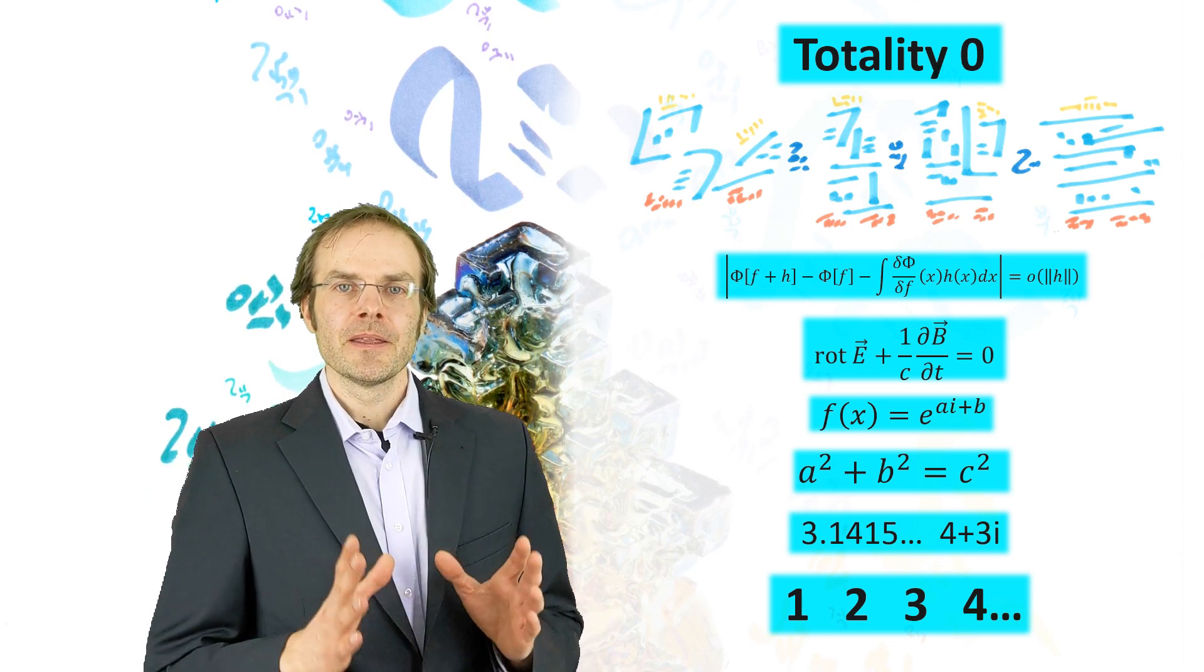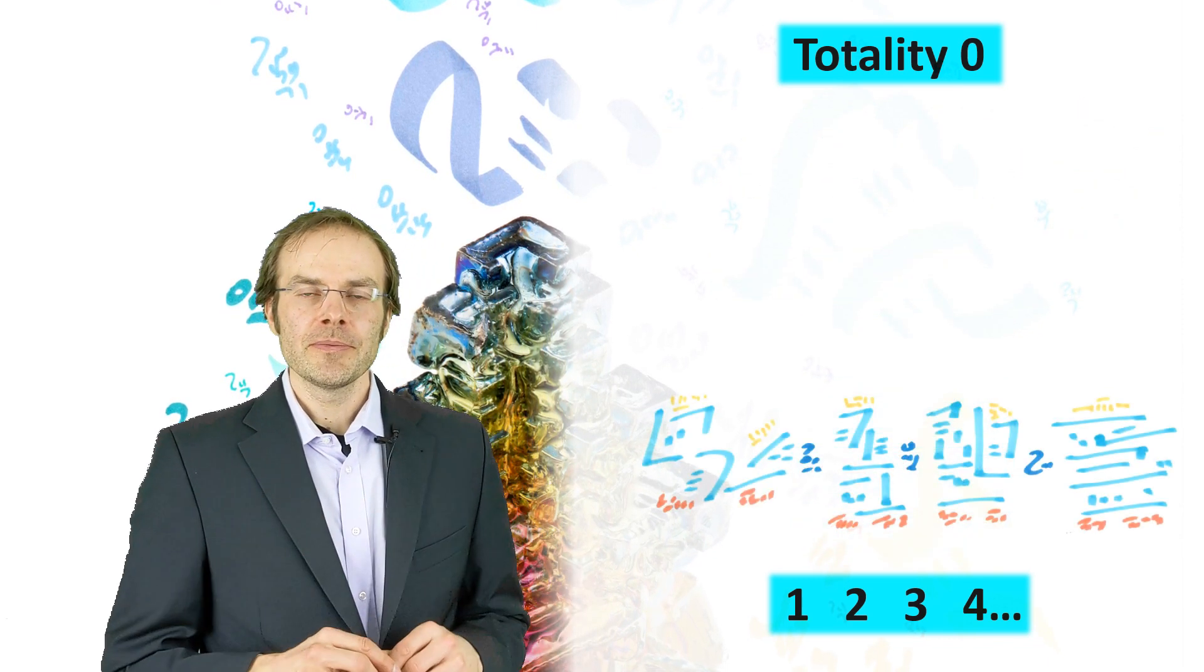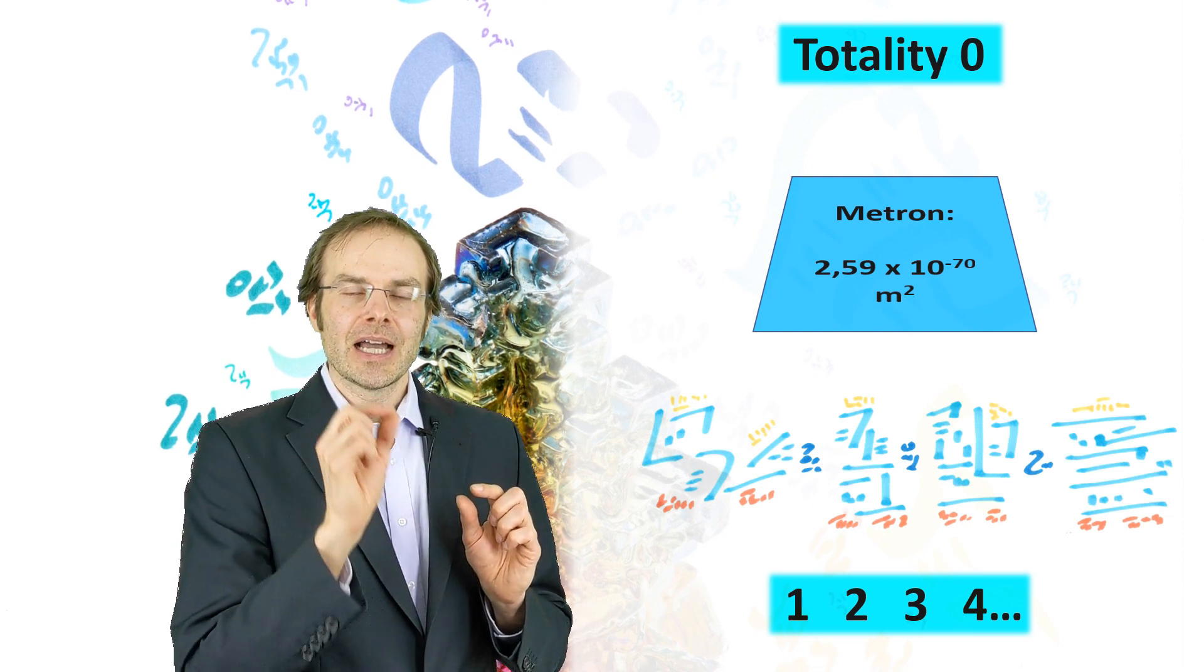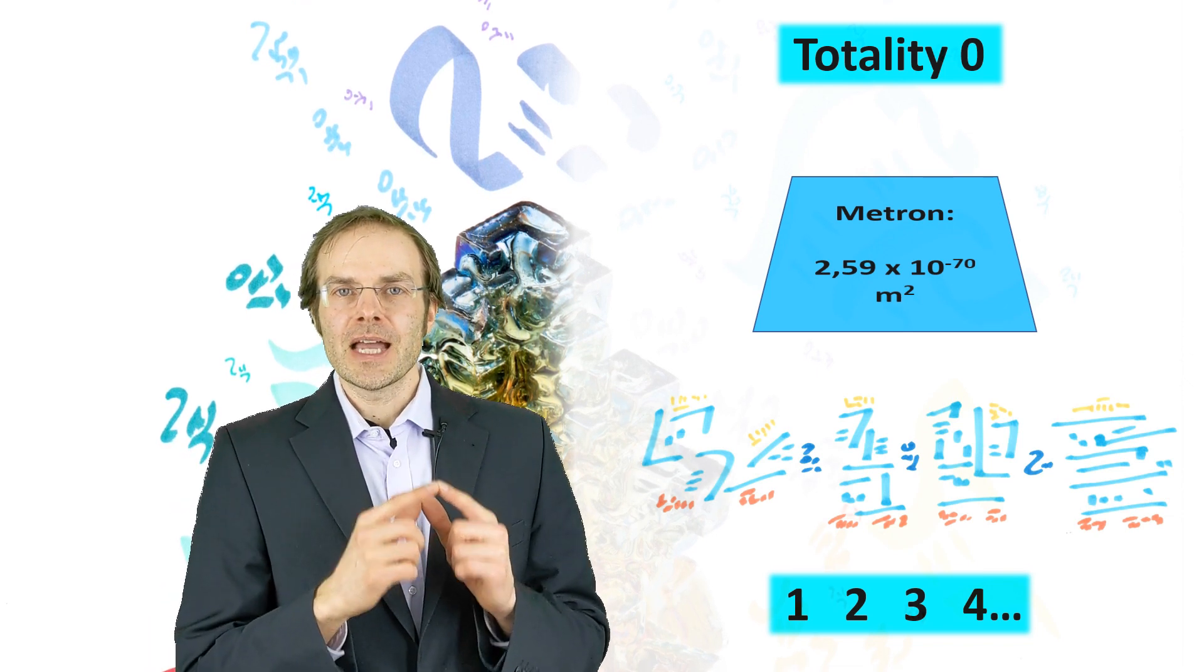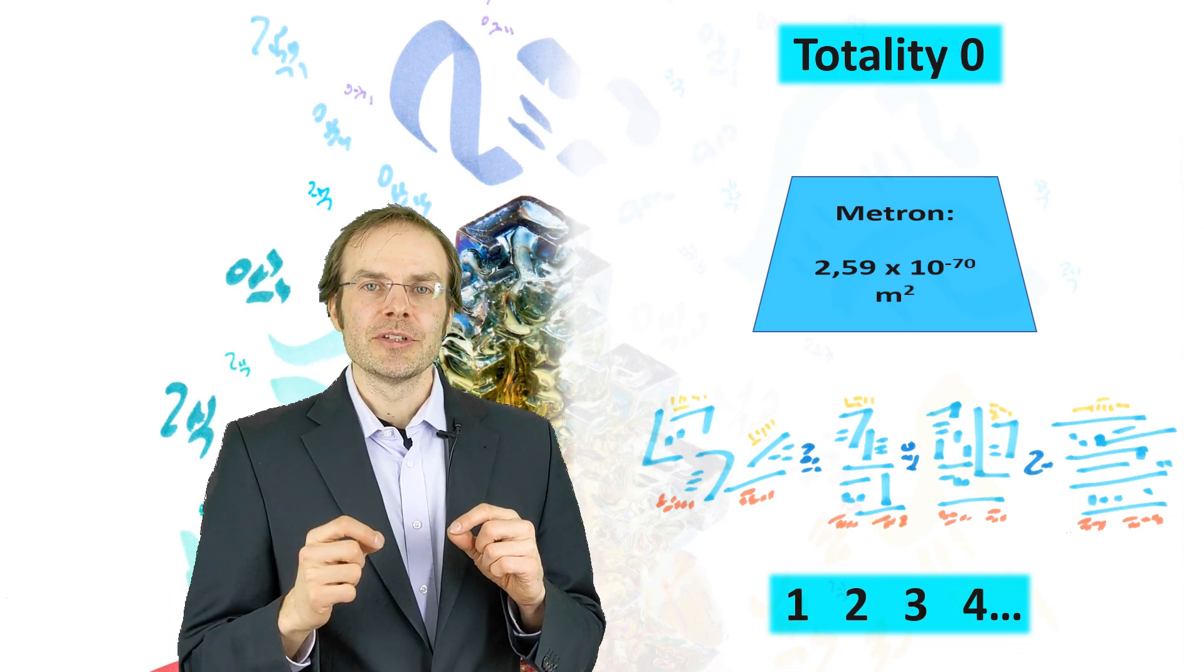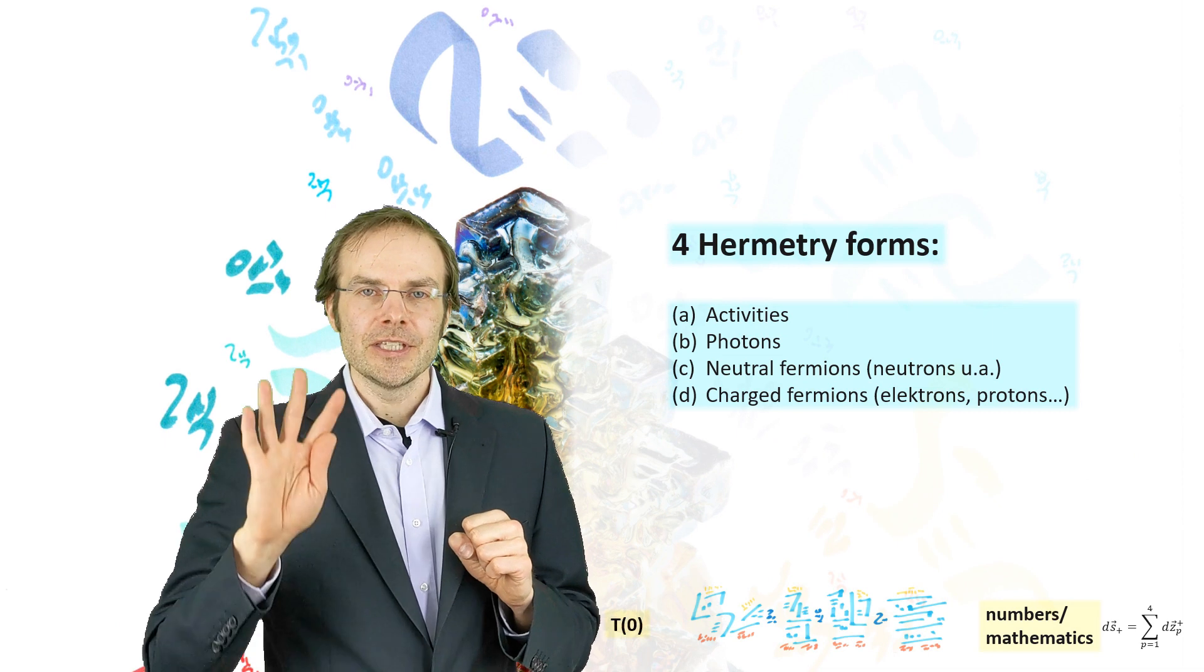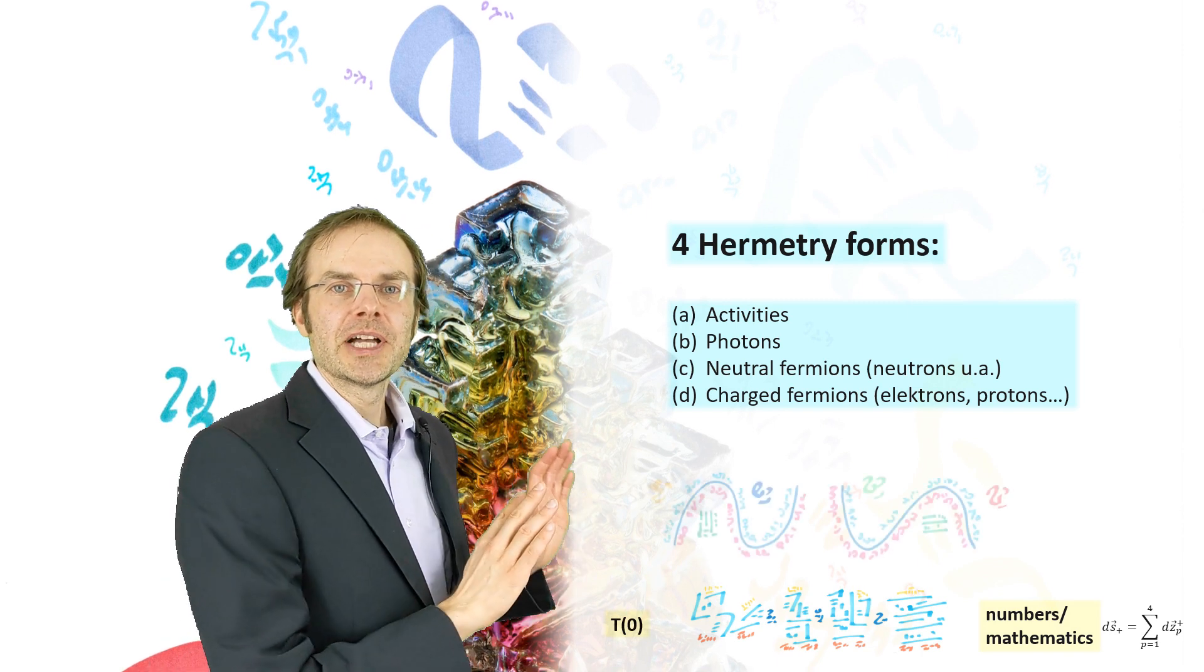Now, if you have already seen the video about the elementary particles, you remember the concept of the metron—the smallest quantized area from which the world, or the fabric of reality, consists. Until the metron, we can get with mathematical functions, and from that, the concept of the metron arise the so-called hermetry forms. There are four hermetry forms from which then arise the elementary particles.